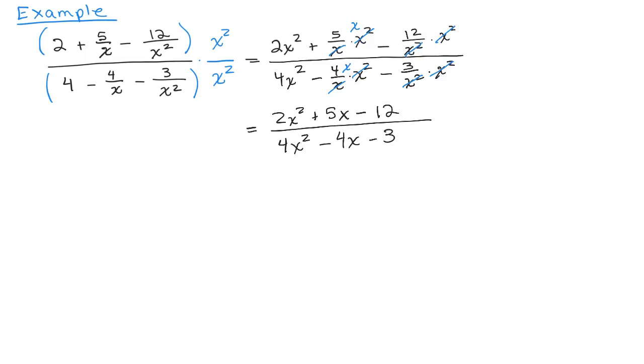All right, so by multiplying by the least common multiple of all the denominators, which is x squared, and then simplifying, we eliminate a complex fraction. And now we have just a rational expression.